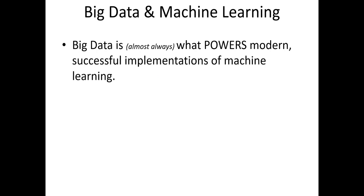Now that we have a grasp of some of these terms, we can see the interconnection between big data and machine learning, and understand why big data as a popular term came first in popular consciousness and then machine learning followed. Big data is almost always what powers modern, successful implementations of machine learning — almost every recent successful iteration of machine learning innovation has come from having massive amounts of data married to theoretical advances in this space.